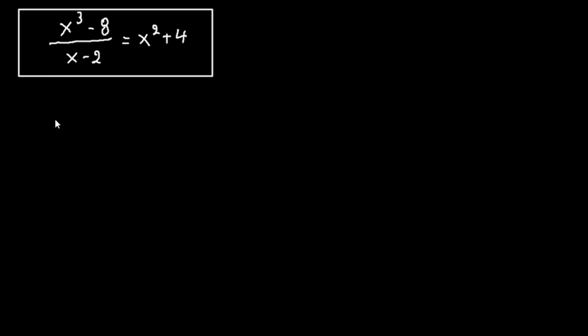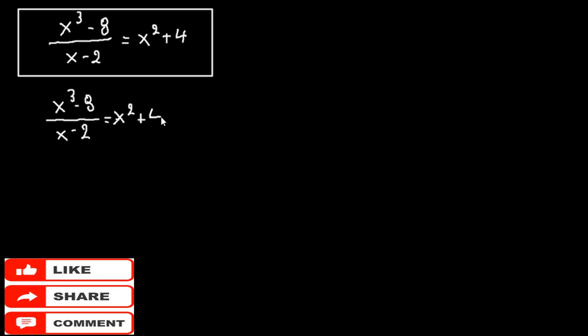So if we write this equation again, we have x to the third minus 8 over x minus 2 equals x squared plus 4.